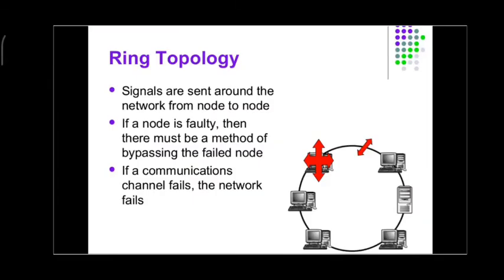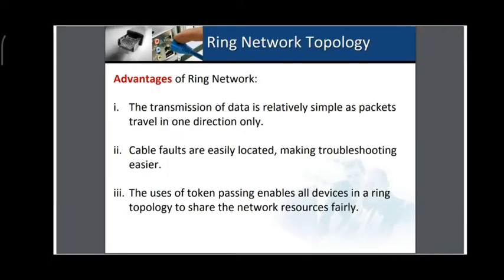Signals are sent around the network from node to node. If a node is faulty, there must be a method of bypassing the failed node. An example is like a UPS — when the power is down, you switch on the UPS to bypass the power failure. If the bypassing technique is adopted there will be no issue; if it is not, the communication channel fails and the network will also fail.